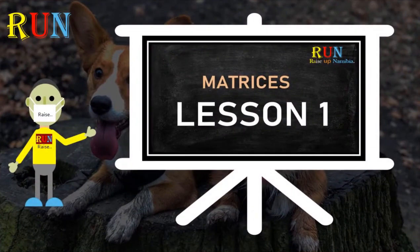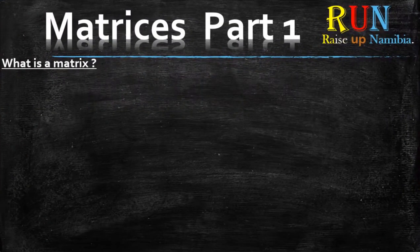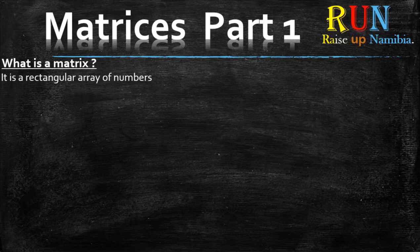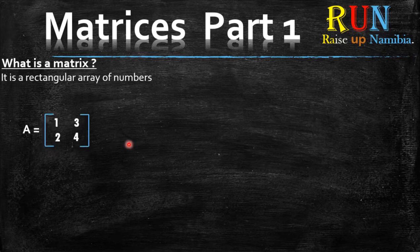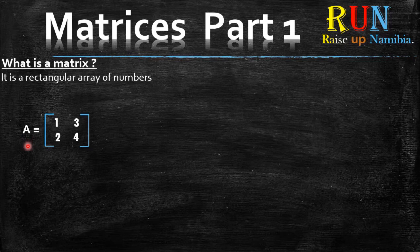So get your pens and your notebooks ready. What is a matrix? A matrix is a rectangular array of numbers. Now if you don't understand this definition, don't worry — we will get into examples that will enlighten your understanding. For example, matrix A over here. Now whenever we are naming a matrix, we use a capital letter. Hence, the matrix A is named with a capital letter A.